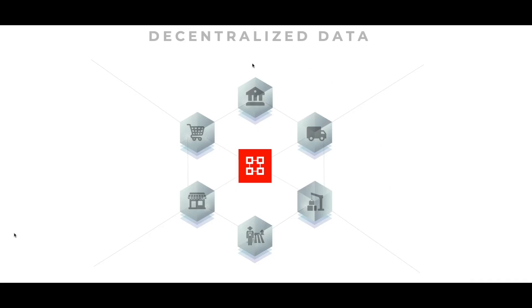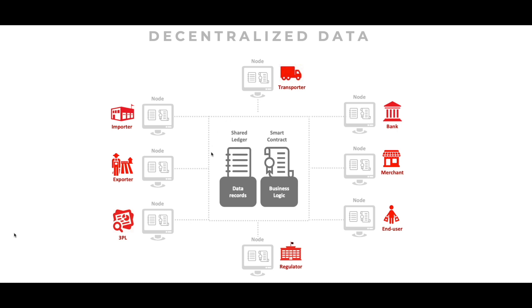The Smart Hub is a decentralized data ecosystem where all actors' participation matters. In the Smart Hub, members themselves create their own blockchain ecosystem and share data via a decentralized mechanism. Data exchanged through the Smart Hub is registered on a shared blockchain ledger.